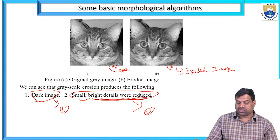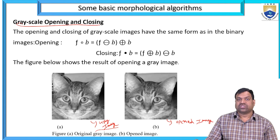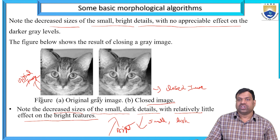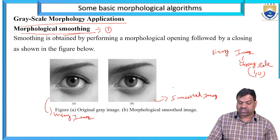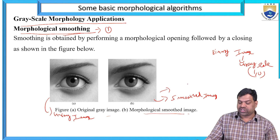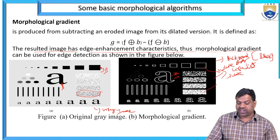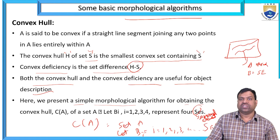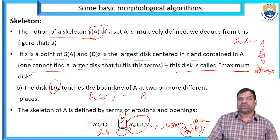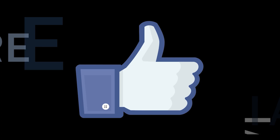Greyscale morphology: dilation, erosion, opening, and closing applied to gray images. Grayscale dilation produces a bright and slightly blurred image with small dark details reduced. Grayscale erosion produces a dark image with small bright details reduced. Grayscale opening and closing have the same form as binary. Greyscale morphological applications include smoothing, gradient for edge detection, connected components extraction, convex hull, and skeleton.